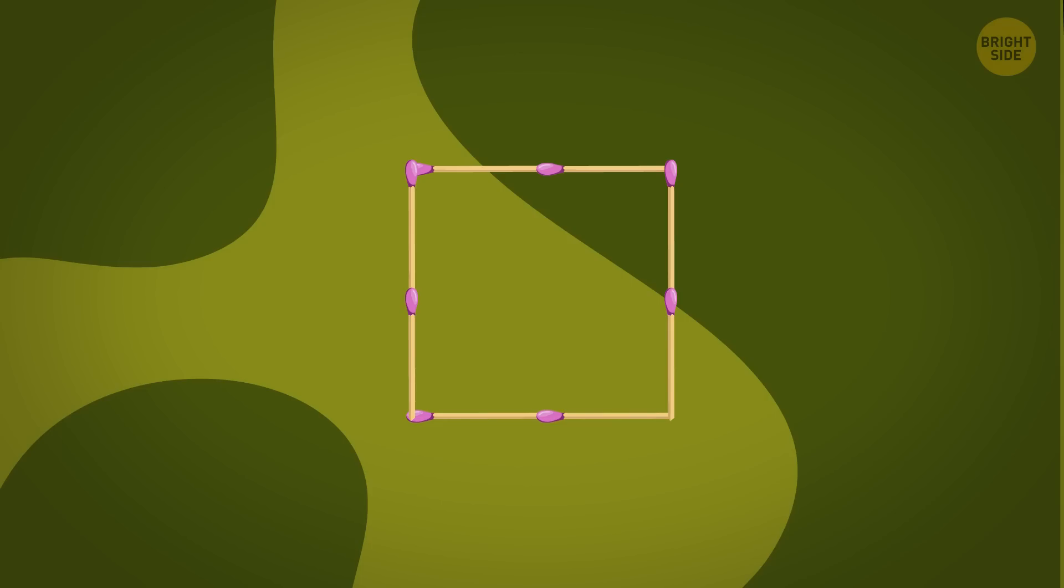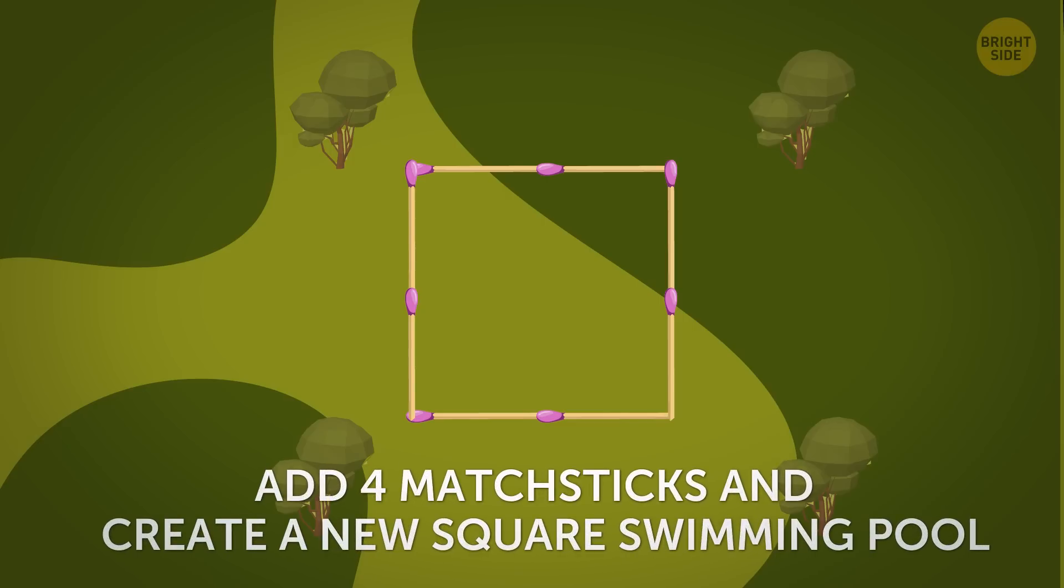A billionaire wants to expand a swimming pool in his garden and asks for your help. But there are 4 old oaks nearby. And you cannot remove them. Can you add 4 matchsticks and rearrange the entire shape to create a new square swimming pool?